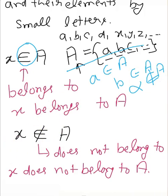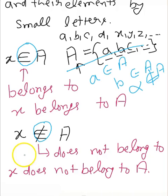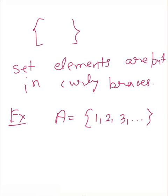For example, if alpha is not in our set, then alpha does not belong to A. You need to understand these two symbols: 'belongs to' means that particular element is in that set, and 'does not belong to' means that element is not in that set. Also, we put the elements of a set in curly braces.